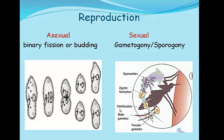They have the ability to reproduce by asexual or sexual reproduction. Asexual reproduction can occur by budding or binary fission — here the mother parasite divides by binary fission to produce two daughter parasites. Sexual reproduction occurs by fusion of the male and female gametes by a process called fertilization; male and female gametes are formed in a process known as gametogony or sporogony.